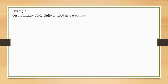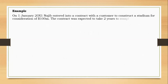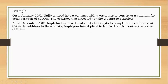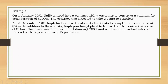We'll go directly to the question. It's the same question from the first channel: 10x1, Magic entered into a contract with a customer to construct a stadium for a consideration of 100 million dollars. This is the contract price. The contract was expected to take two years to complete. After the first December 20X1, Nagip had incurred costs of 24 million dollars.